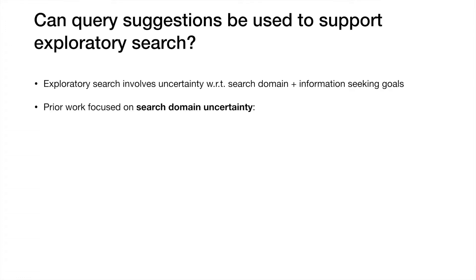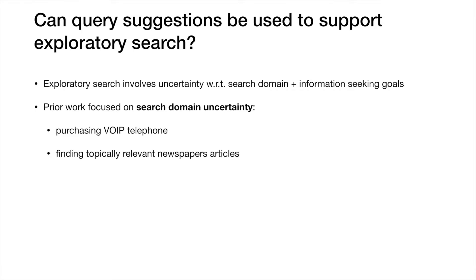There is prior work on using query suggestions in exploratory search, but this is focused on areas where there is search domain uncertainty. In the two main studies we found — purchasing a VoIP telephone and identifying topically relevant newspaper articles — users would have been able to leverage their existing knowledge to assess the relevance of query suggestions. But it is unclear whether these findings generalised to knowledge acquisition tasks such as scientific literature search.